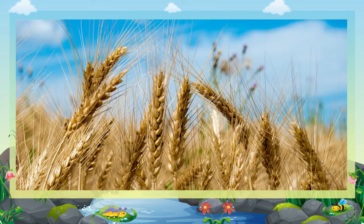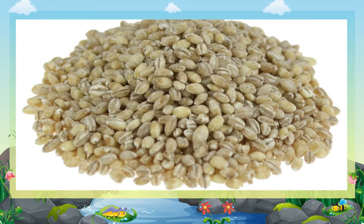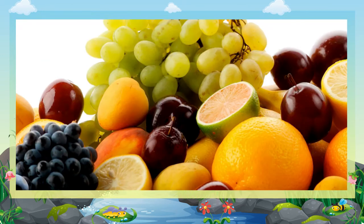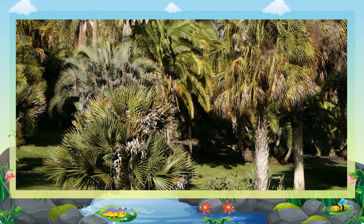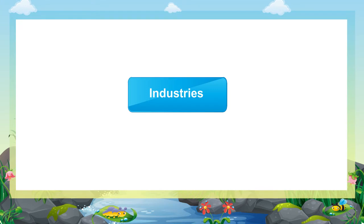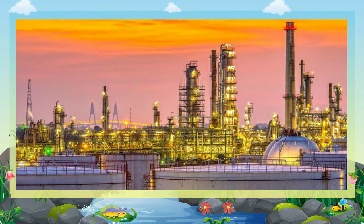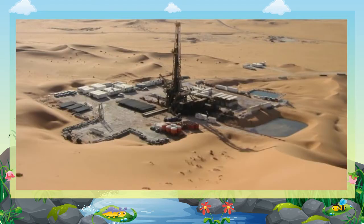Agriculture: Sea water from which salt has been removed is used for irrigation. People here grow wheat, barley, fruits, and vegetables in plenty. Date palm trees grow easily in this region.